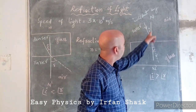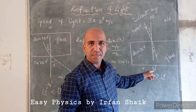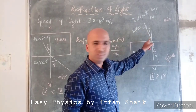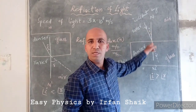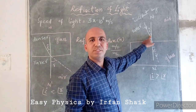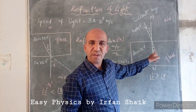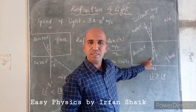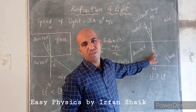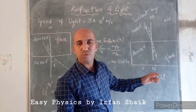The line MN' is a perpendicular line called the normal line. The angle between the incident ray and the normal line is called the angle of incidence, denoted by small i. The angle between the refracted ray and the normal line is called the angle of refraction, denoted by small r. Now we are going to discuss how these two values relate to each other.